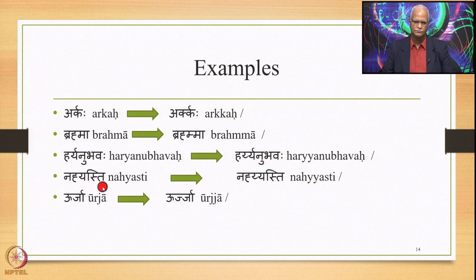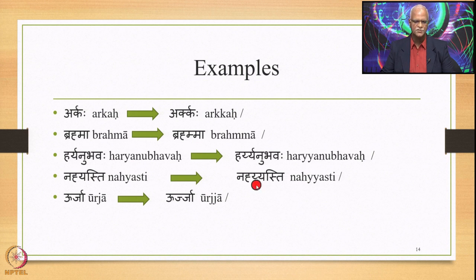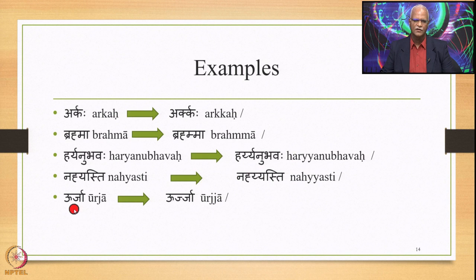Similarly Naihasti: there is Akara after Na (Ach), followed by Ha, followed by Ya (Yar). So this Yar gets reduplicated and we have two Yakaras substituting one Yakara. Similarly Urja: U is an Ach, followed by Refa, followed by J which is Yar. So this Yar gets reduplicated and we get Urja.